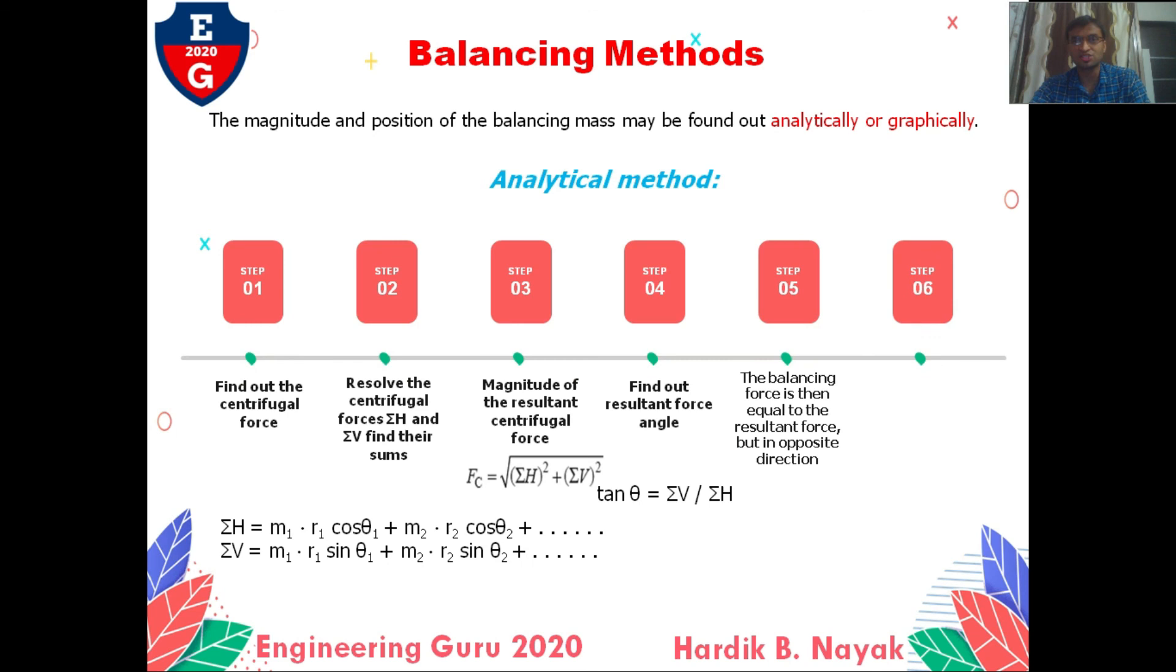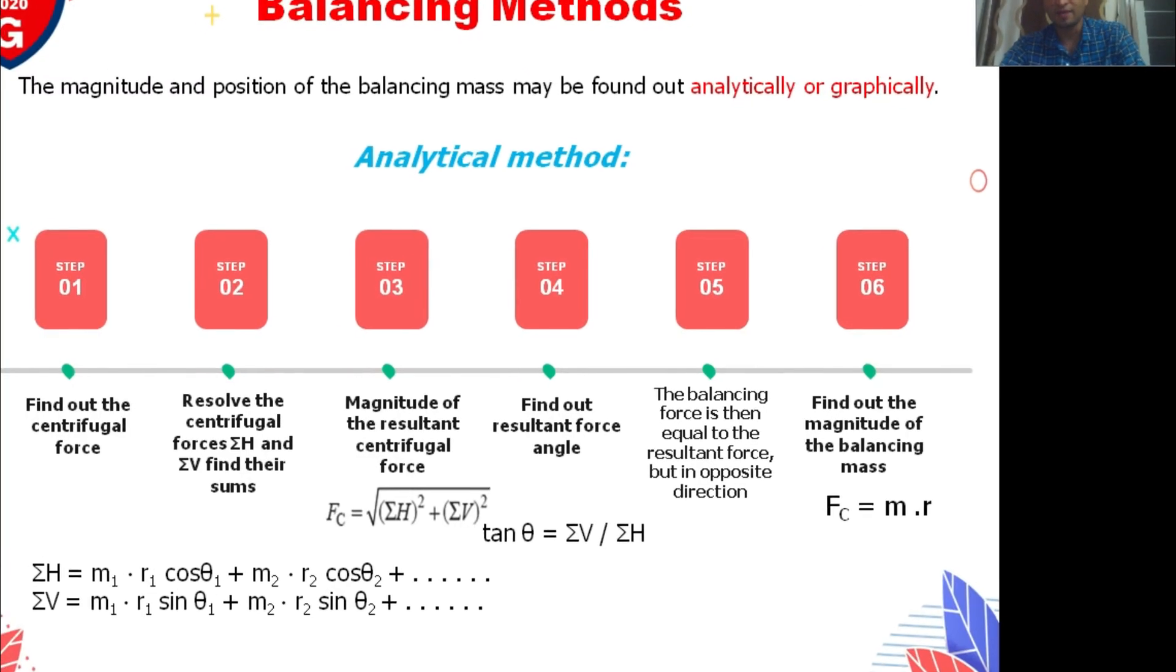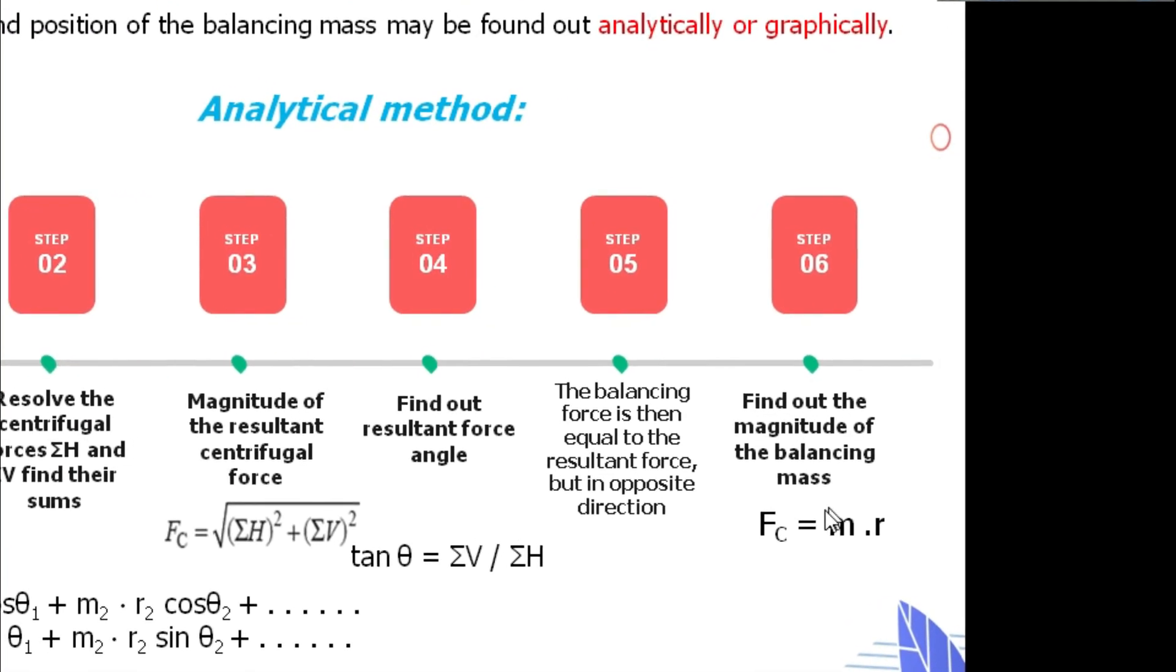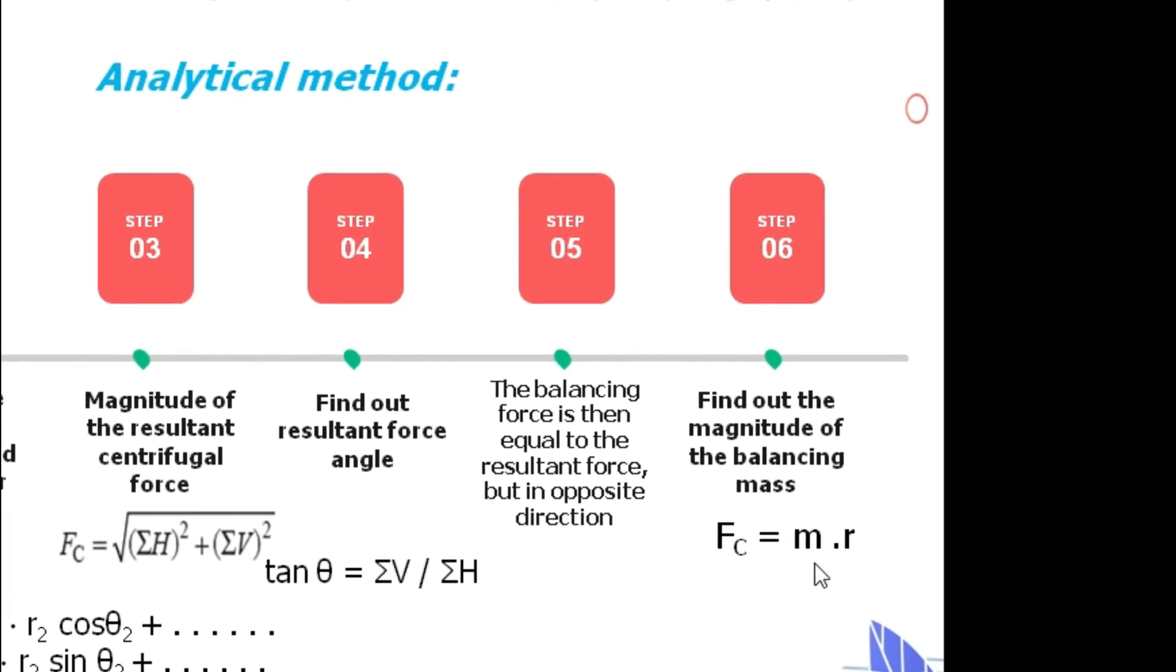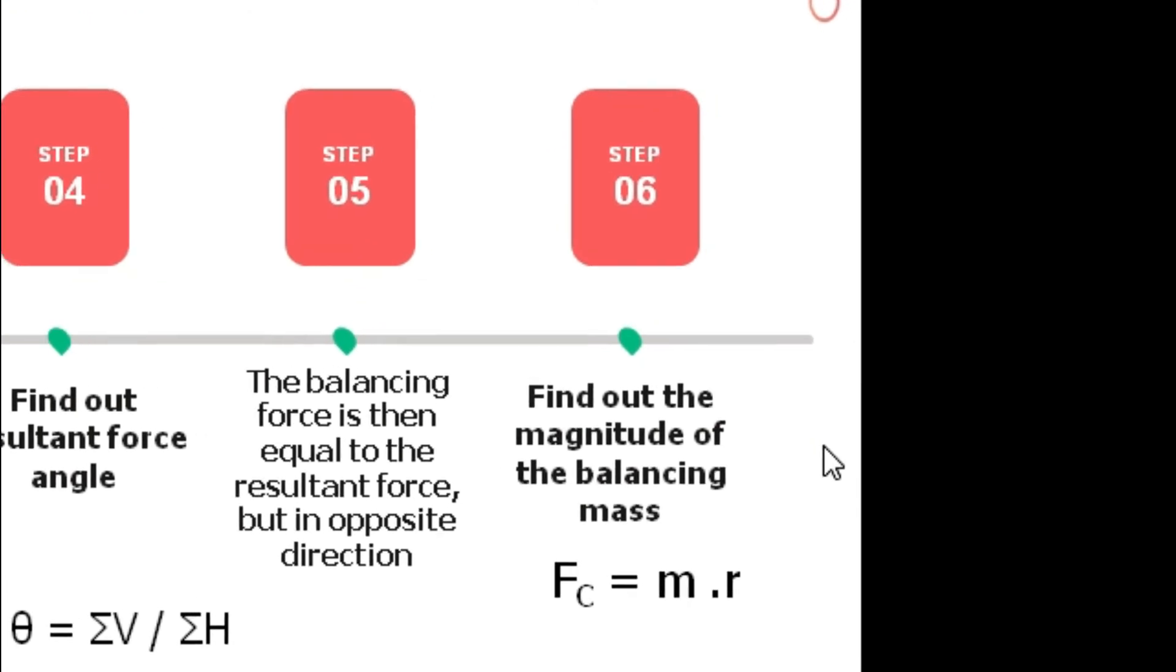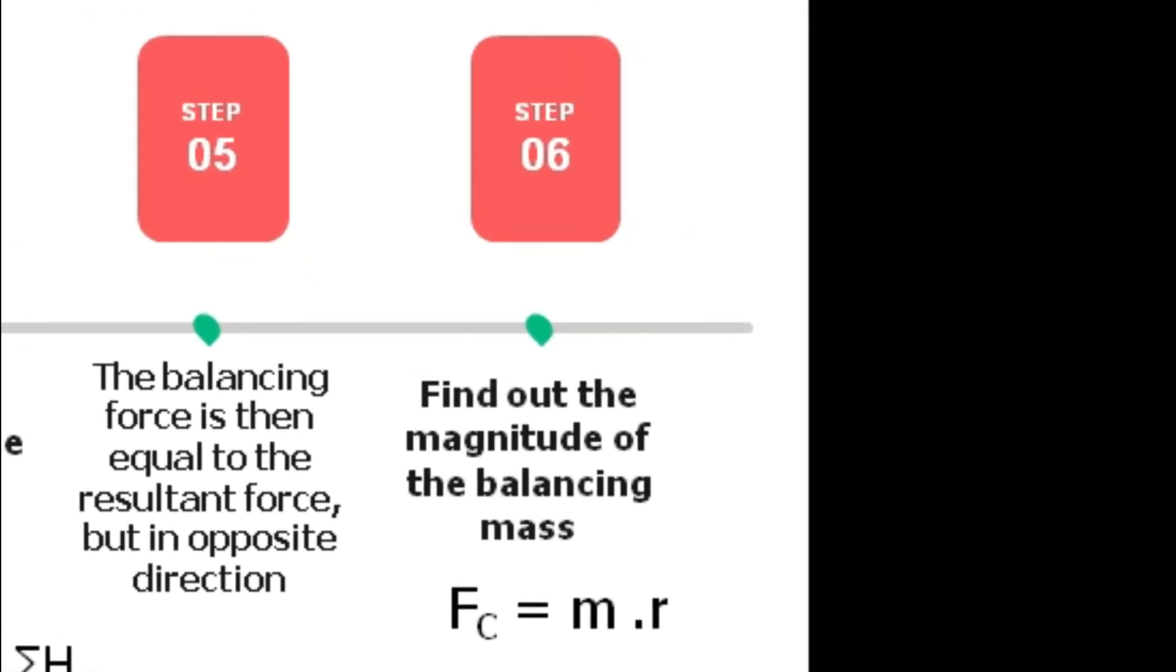And final step, that is the sixth step: find out the magnitude of the balancing mass. Fc equals M into R, so we can find the balancing mass or radius. This is the final step for finding the balancing mass. Thank you very much.